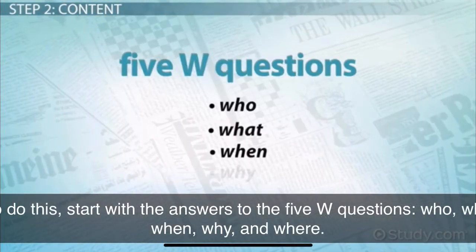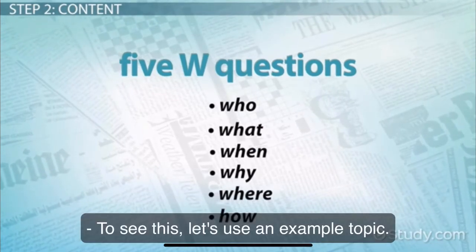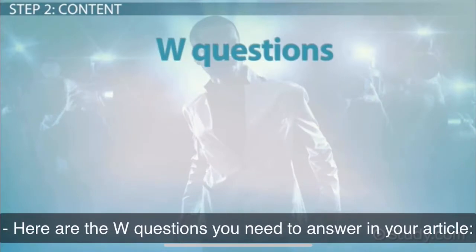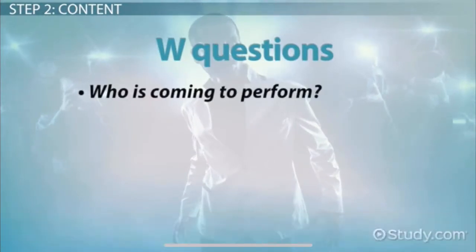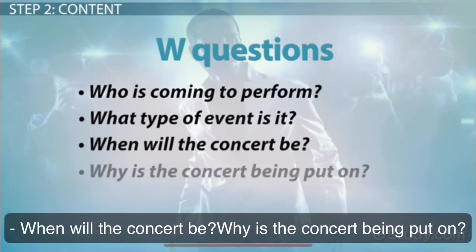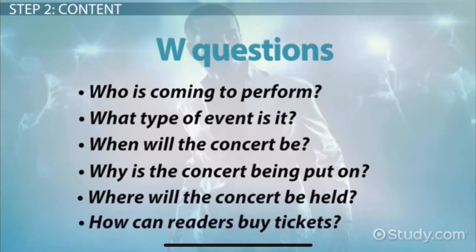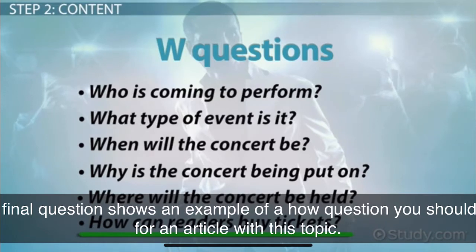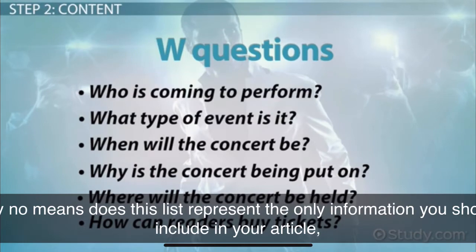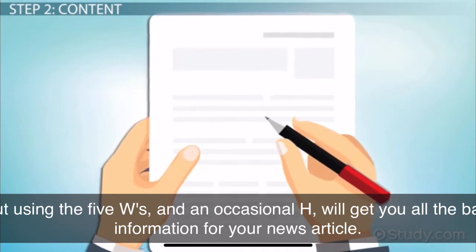Who, what, when, why, and where. You can also consider the how of the case. Let's use an example topic. Imagine you're writing an article about a big star coming to the area to perform a concert. Here are the W questions you need to answer in your article: Who is coming to perform? What type of event is it? When will the concert be? Why is the concert being put on? Where will the concert be held? And how can readers buy tickets? By no means does this list represent the only information you should include in your article. But using the five W's and an occasional H will get you all the basic information for your news article.